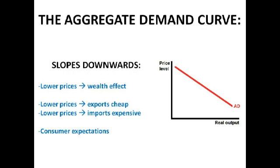When UK prices are lower, exports are quite cheap. In other countries we can sell more exports, people have more money, demand increases. Lower prices also mean that imports are quite expensive, so they look expensive in comparison to UK goods, so demand for UK goods increases dramatically. And finally, consumer expectations: when consumers expect the price to rise — say they're anticipating inflation — there's increased consumption. They think, I better buy it now before the prices shoot up. So more is bought when the price is low.